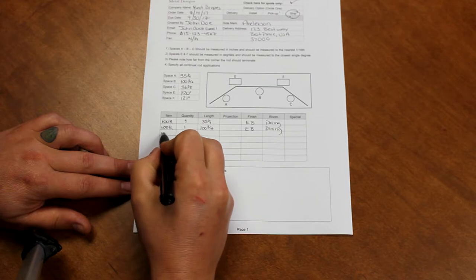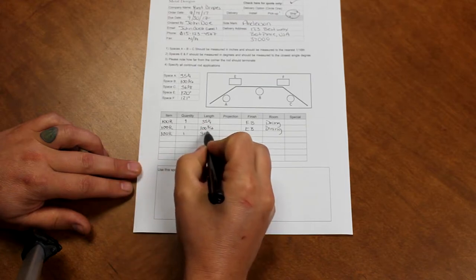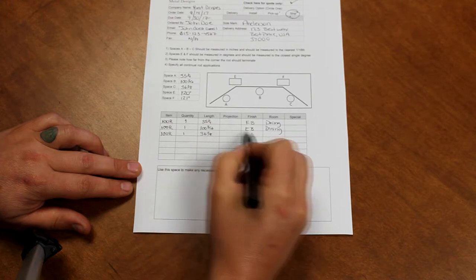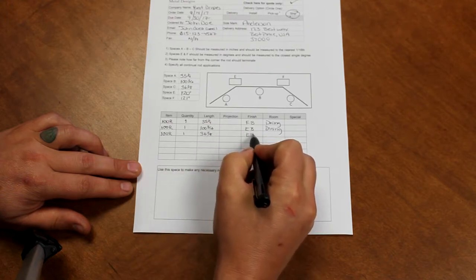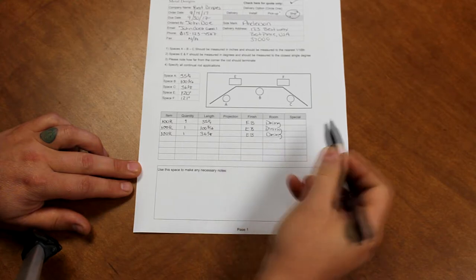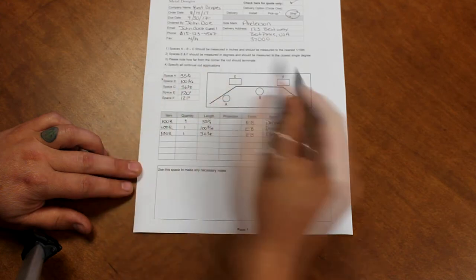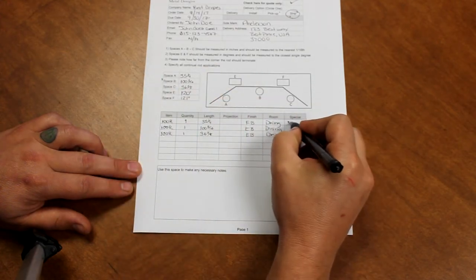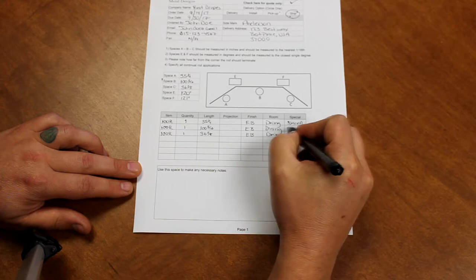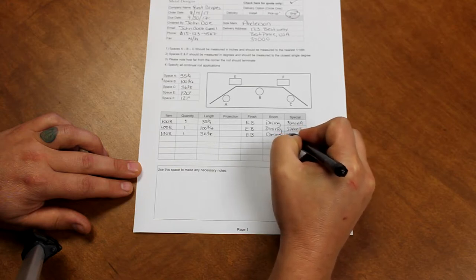Which is item number 100R. Quantity is 1. Length is 36 and 3/8ths. No projection. Finish is English brown. Room is the dining room. At this point I will use the special area to indicate the space in which each rod will go. So for this one we will put in space A. Then space B. And then space C.